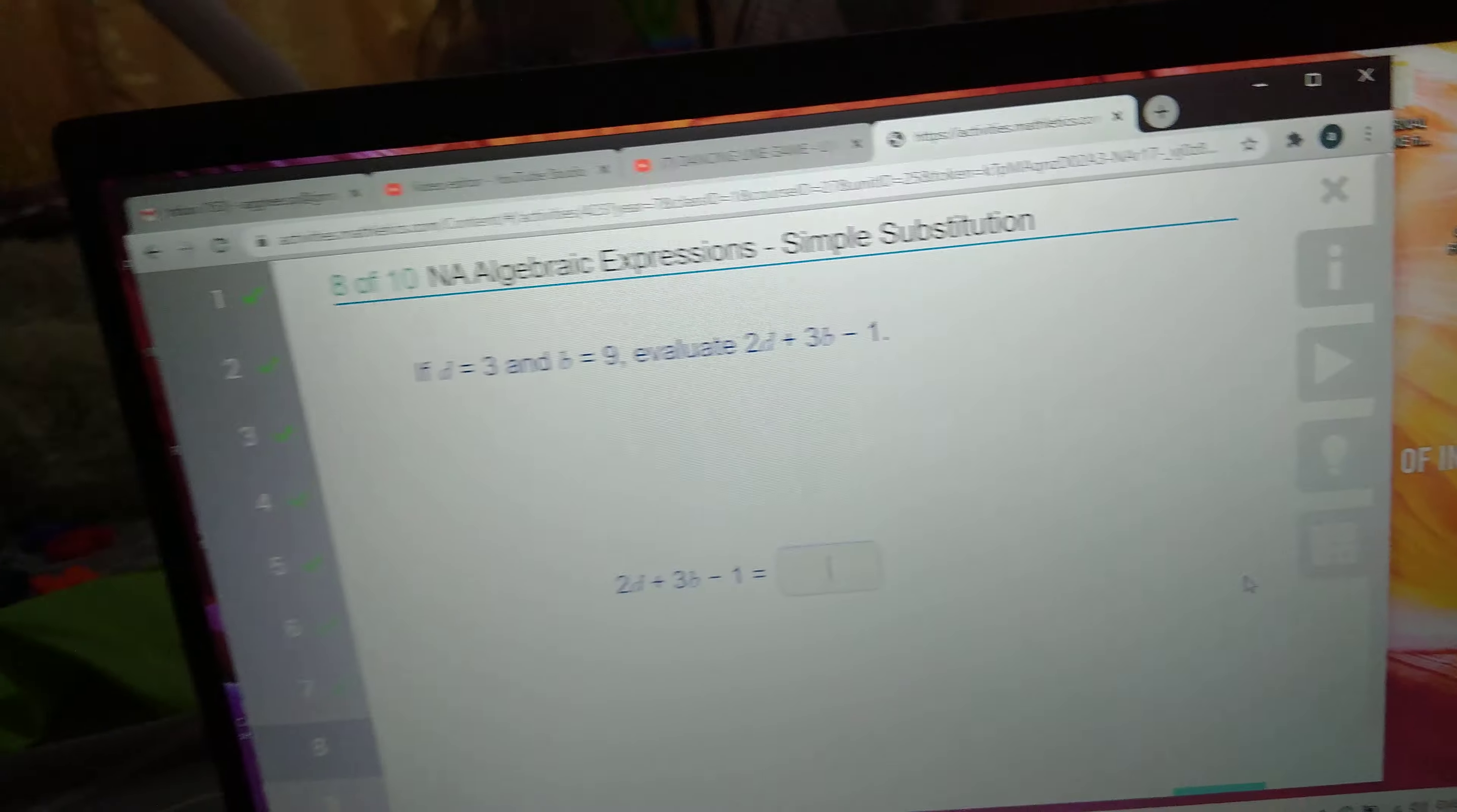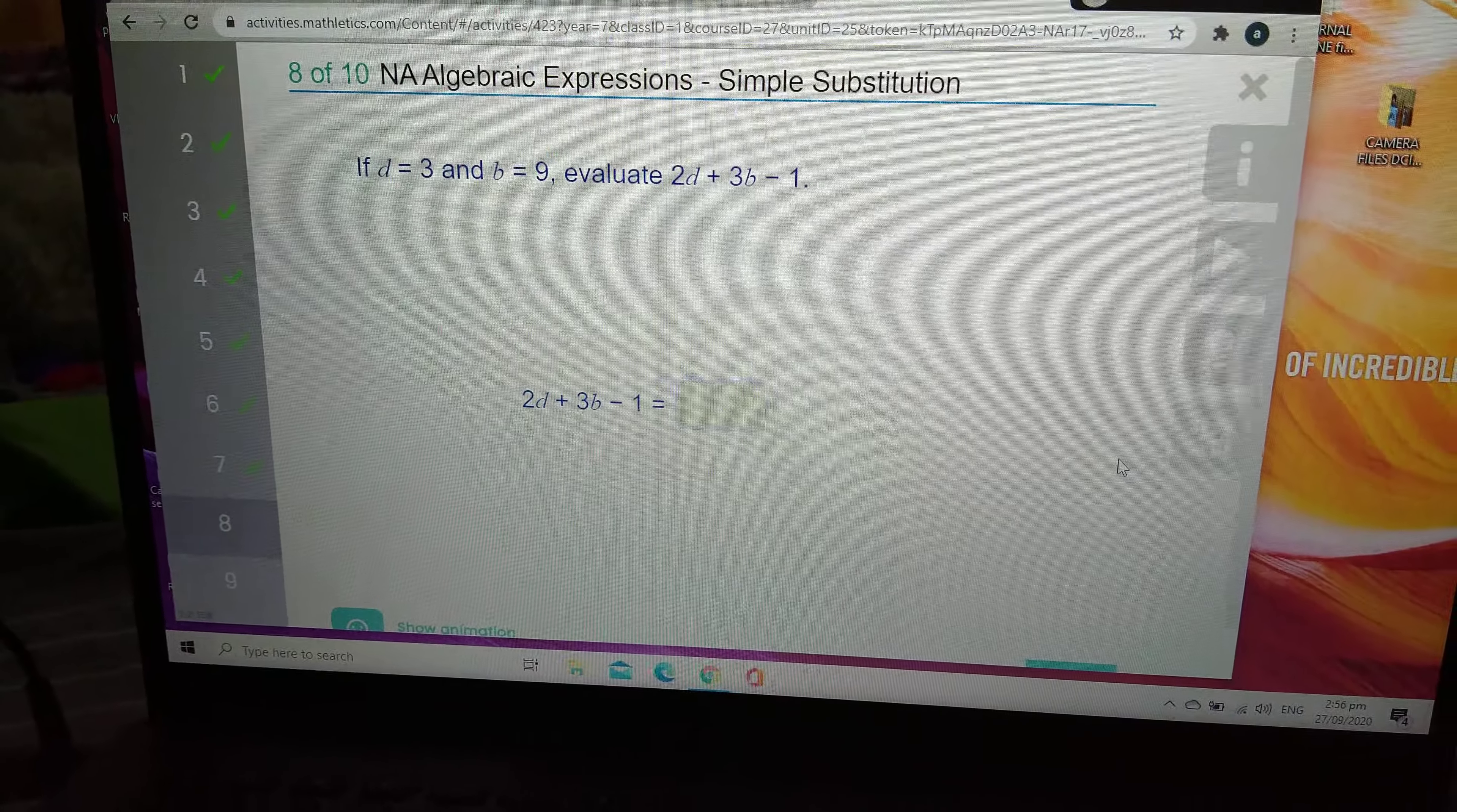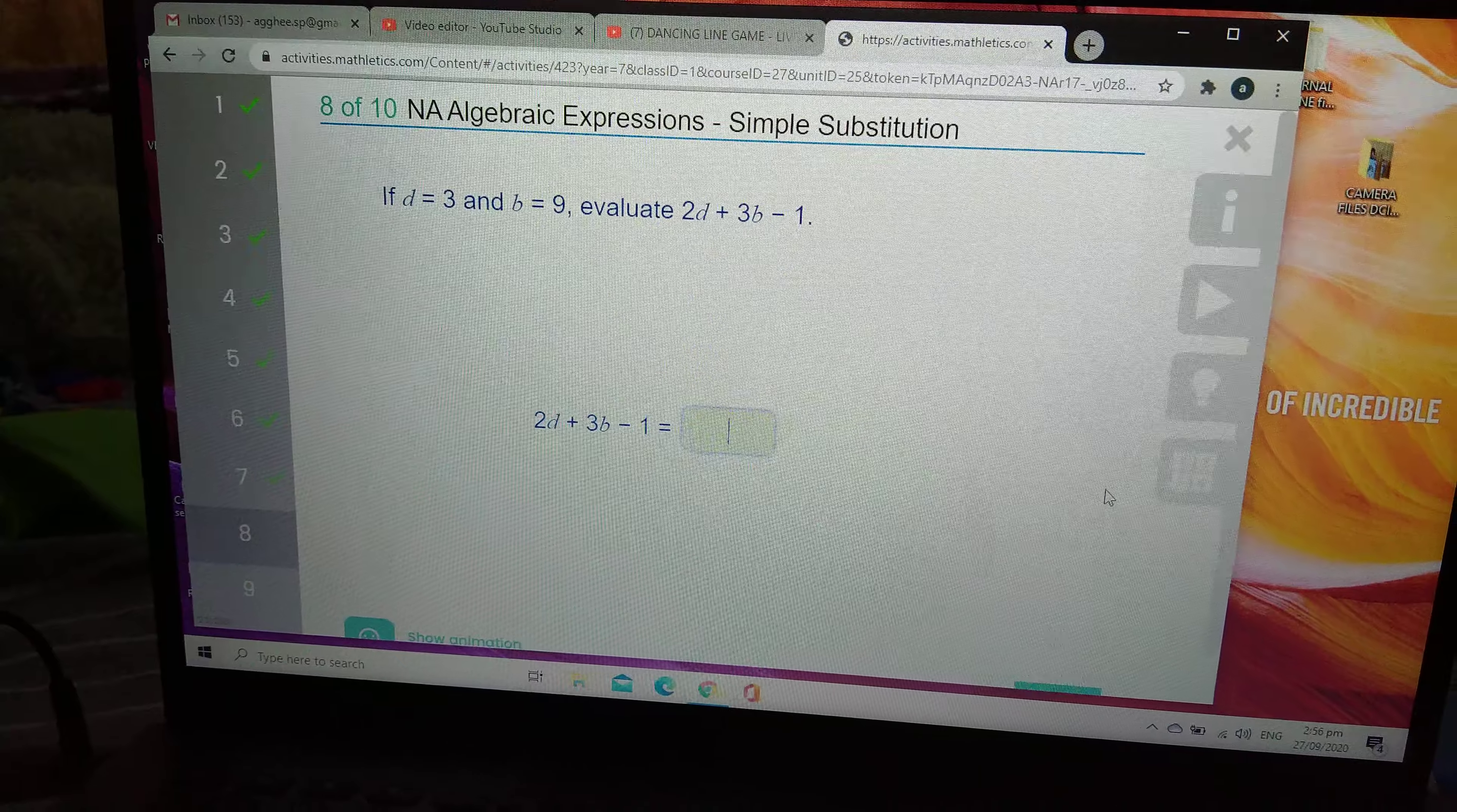Okay, we can see that this is not too tricky. 6 plus 27 equals 33, and with the minus 1, it goes to 32.